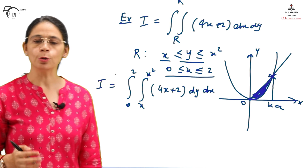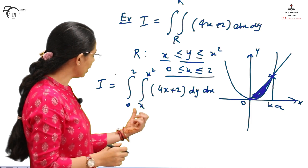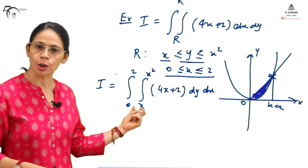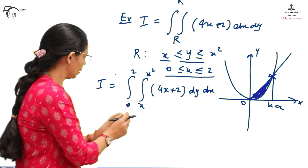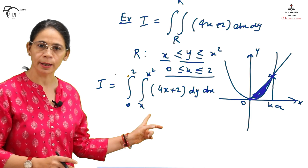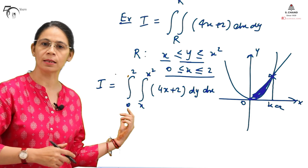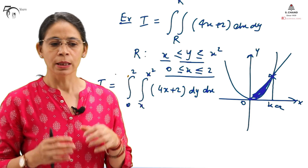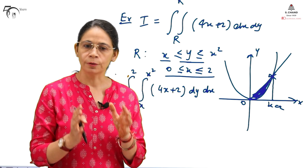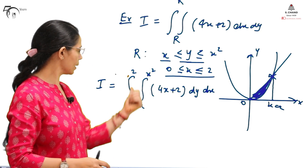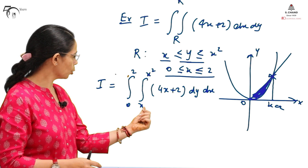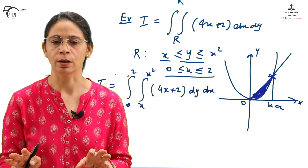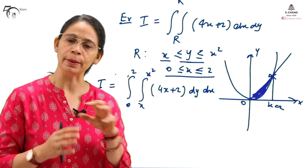Now suppose we would like to change the order of integration — that is, integrate with respect to x first and then with respect to y. Please understand that we cannot simply interchange the limits. We cannot write the limits for x in the inner integration and limits for y in the outer integration as they are, because this is a definite integral and the final answer must be constant. If we keep the outer limit in terms of x, the final answer will be in terms of x, which conflicts with the definition of a definite integral.